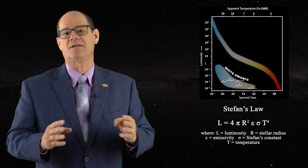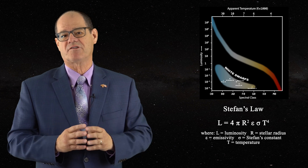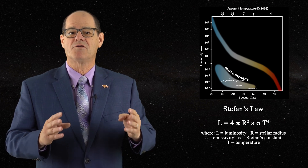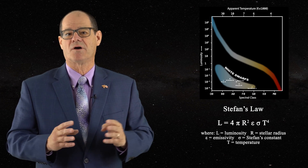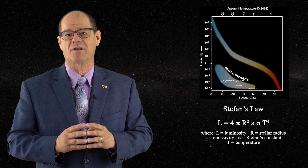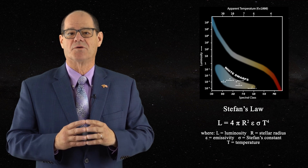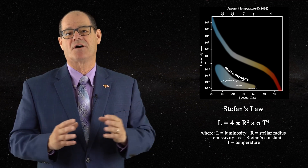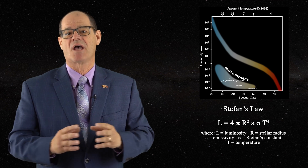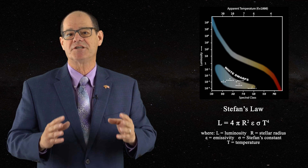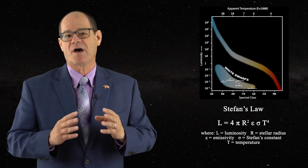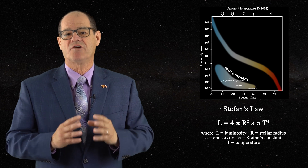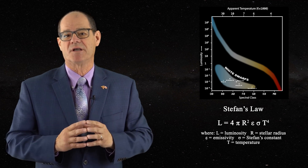This can be readily seen in this depiction of Stefan's law. The only way to lower the luminosity if the temperature is elevated is to lower the radius. The compact nature of these stars was thereby advanced, and red shifts of the hydrogen lines were subsequently used to justify this hyperdensity.